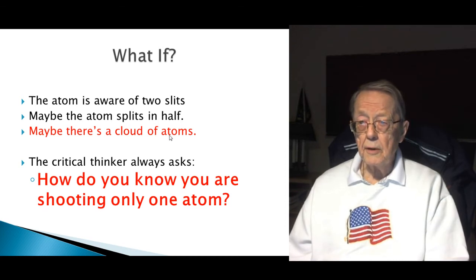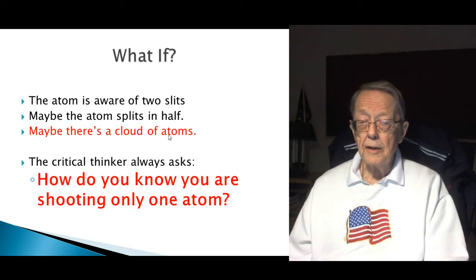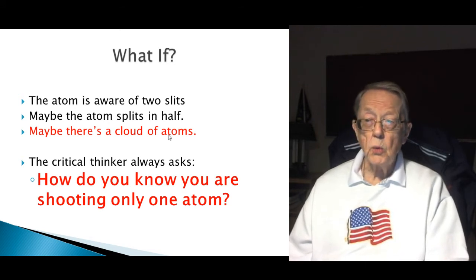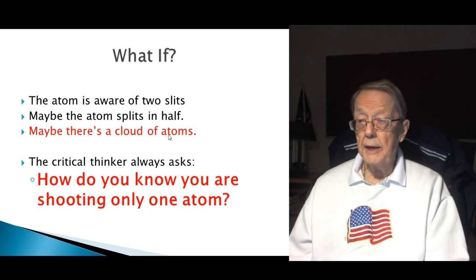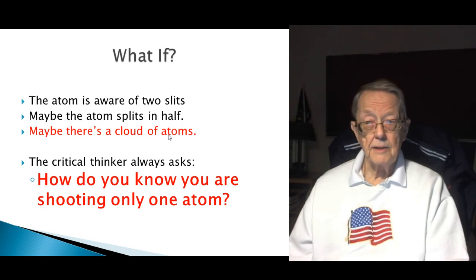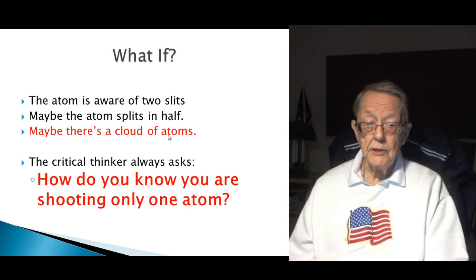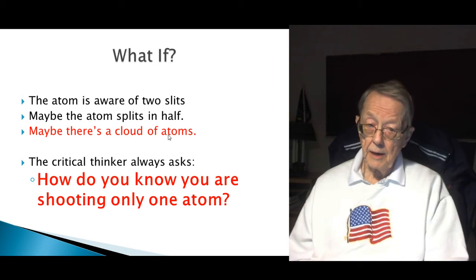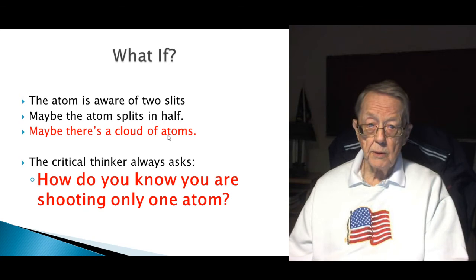My particular take on it is that they adjust the electron gun until the intensity is so weak they don't get a spot on the screen at all. And then they crank it up just a bit. And then they get a spot on the screen. That doesn't guarantee to me one atom. Now, maybe they have it. I don't know everything about the technology that allows them to say they're doing one atom at a time. But that's, to me, a serious question.